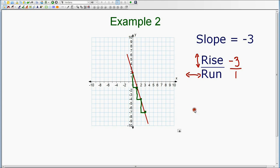So draw a straight line through your points. And this is the graph that represents a slope of negative 3. And you can also put arrows on the end of your line to signify that this line could go on to infinity.